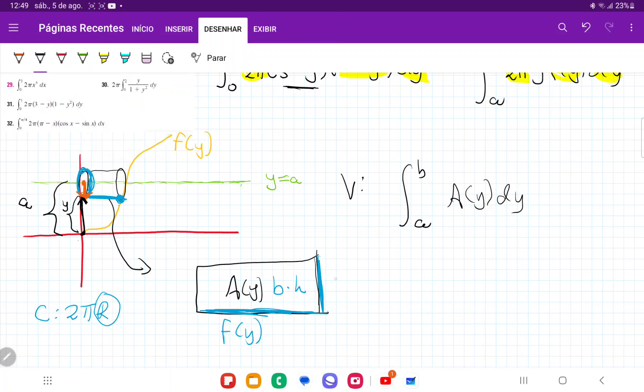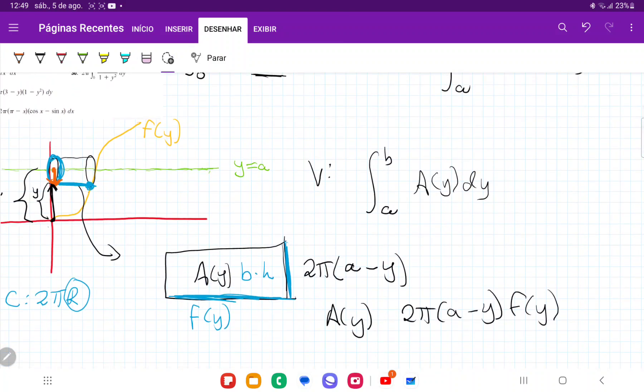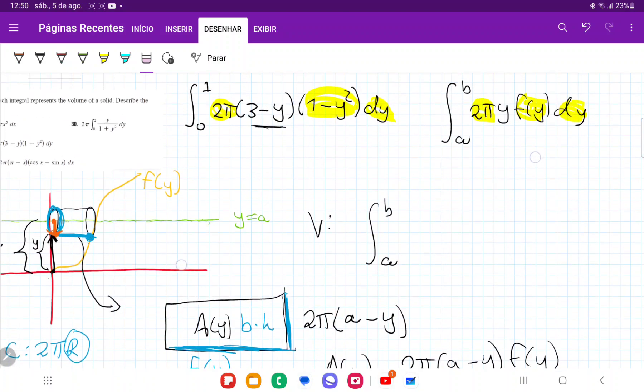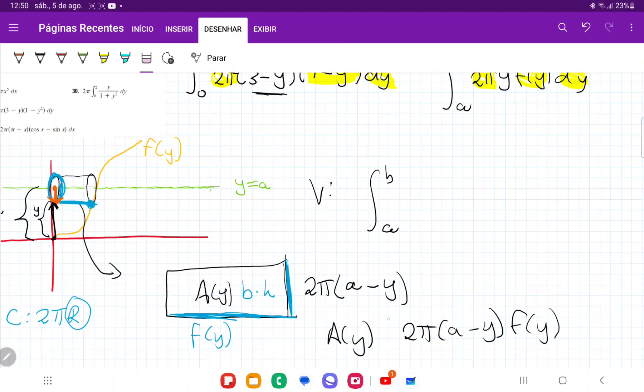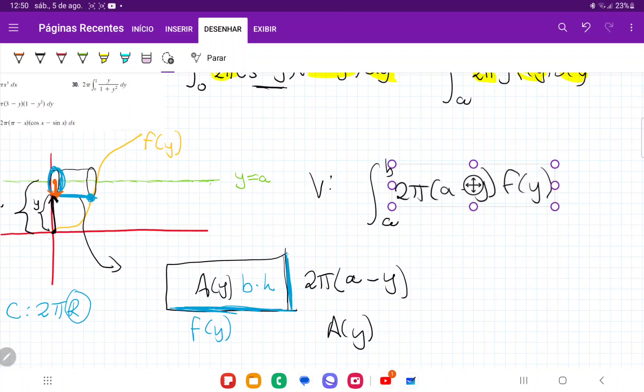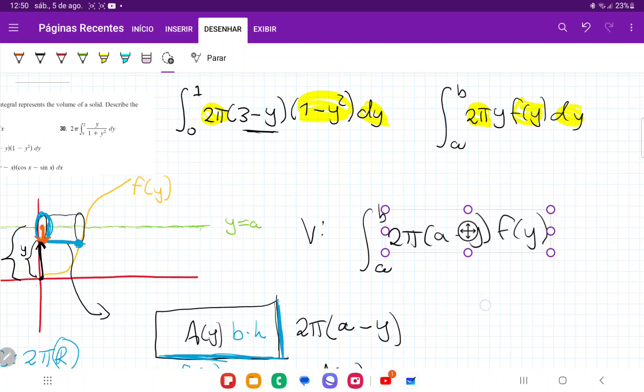And so we can see here that this is just going to be 2π, right, because it's a circumference times a minus y. And so our A(y) is going to be base times height, right, so 2π times (a minus y) times f of y. So once we have this, we're going to move this into our integral because we're just summing up our areas. So once we have this, we are just ready to compare here.